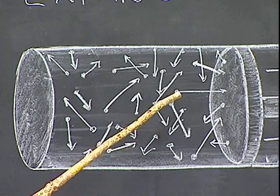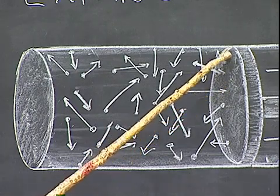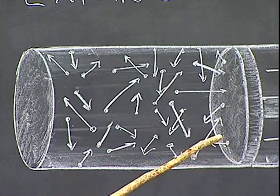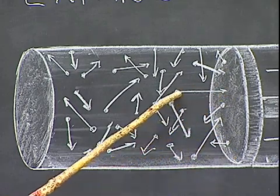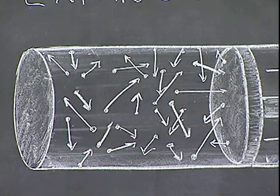Those molecules that are moving at a certain speed come up and strike this target here, this surface of this piston here, and if the piston is at rest, the molecules on the average will bounce off with the same kinetic energy that they came up with.